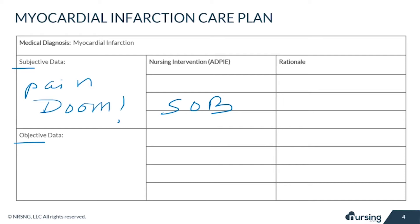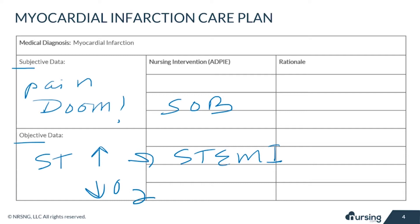Objective data can include ST elevation on the EKG, which is called a STEMI. Other findings include decreased oxygenation, signs of left ventricular failure like crackles in the lungs or S3 heart sounds, tachycardia, and elevated cardiac enzymes. With an inferior MI, bradycardia can be seen.